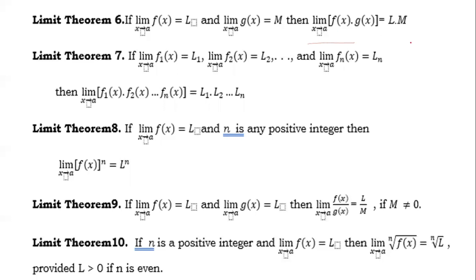Theorem seven: if the limit of f₁(x) as x approaches a equals L₁, the limit of f₂(x) as x approaches a equals L₂, and so on until fₙ(x) as x approaches a equals Lₙ, then the limit of f₁(x) times f₂(x) and so on times fₙ(x) as x approaches a equals L₁ times L₂ and so on times Lₙ.